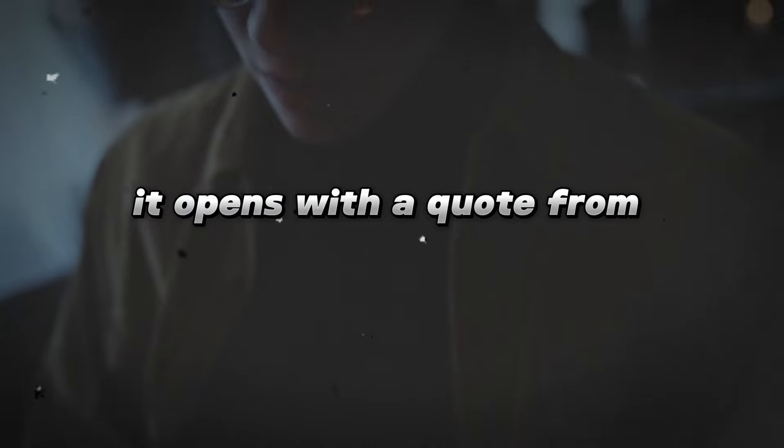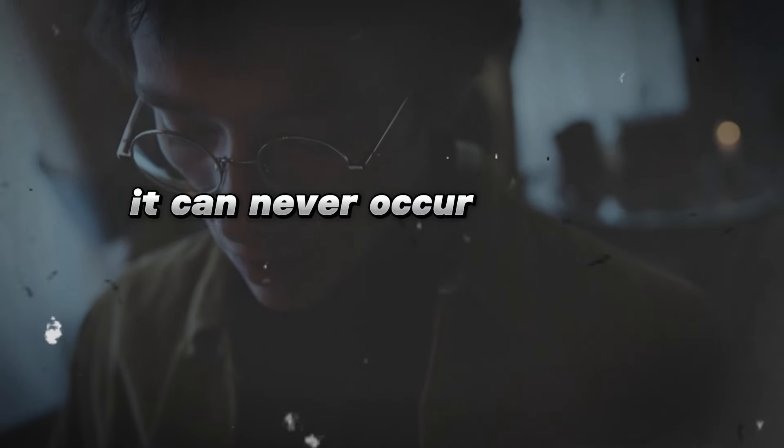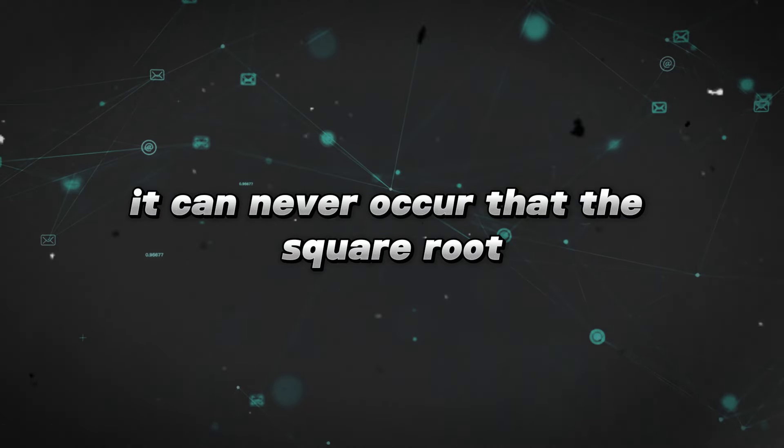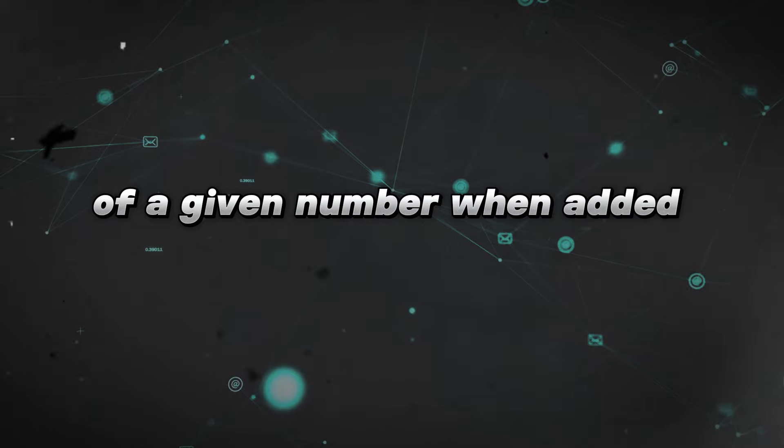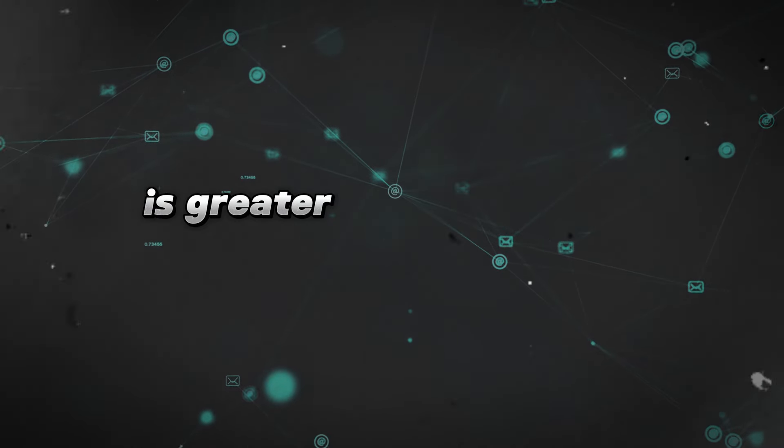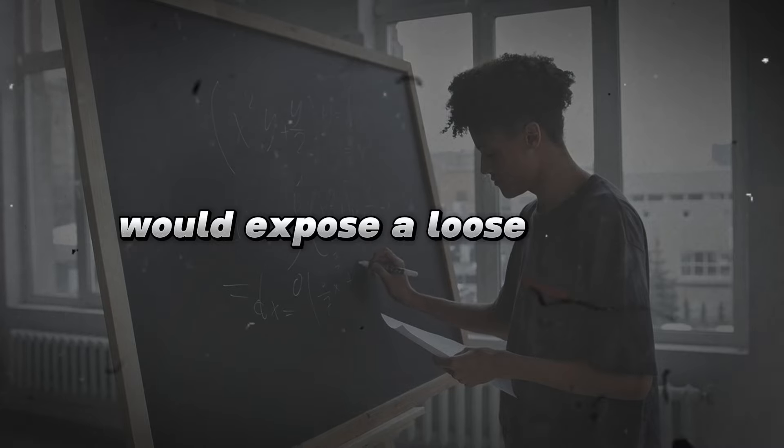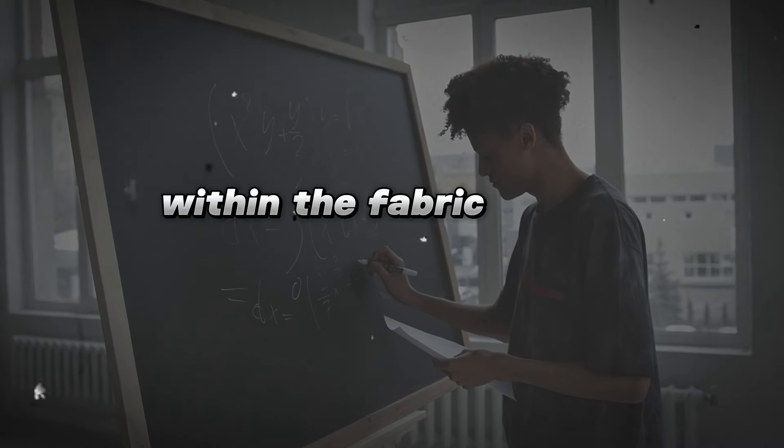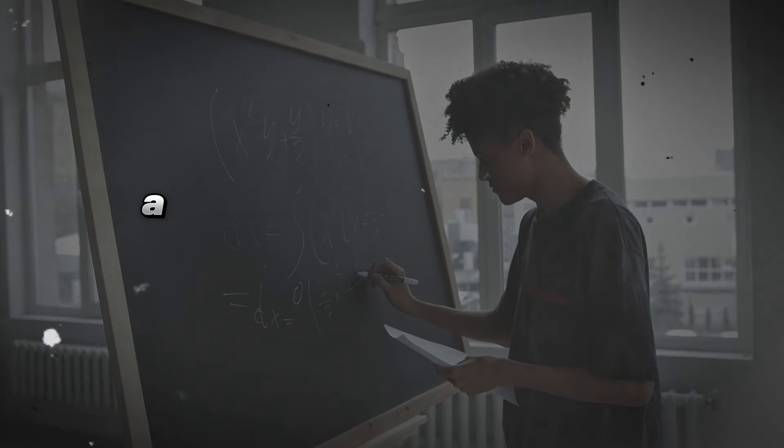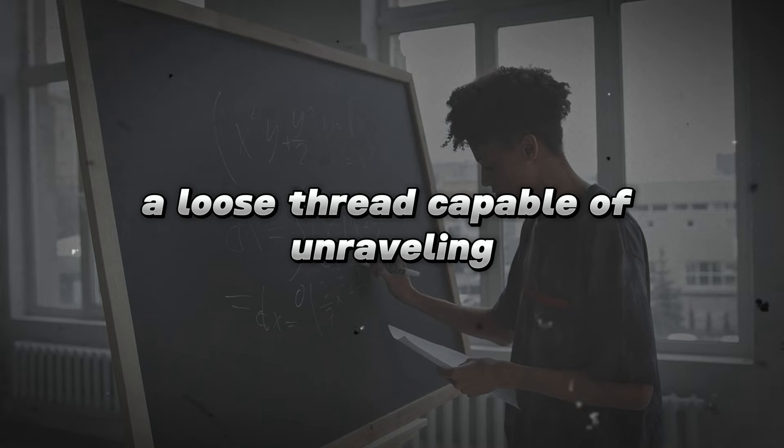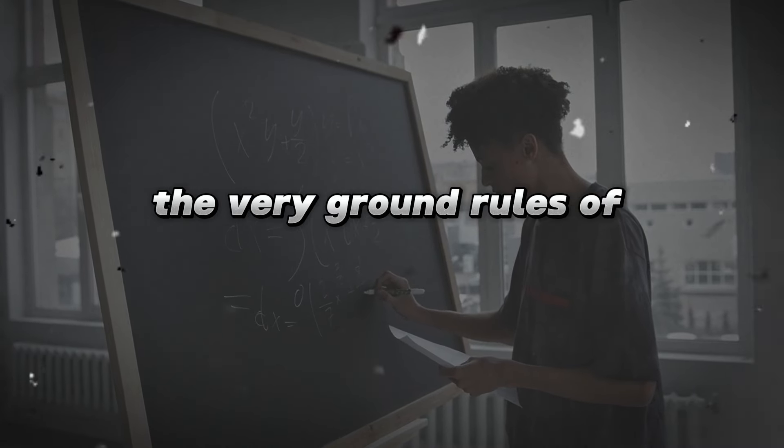It opens with a quote from Terrence: It can never occur that the square root of a given number when added to itself is greater than the initial number squared, for that would expose a loose thread within the fabric of our understanding, a loose thread capable of unraveling the very ground rules of mathematics. That's a bold statement.